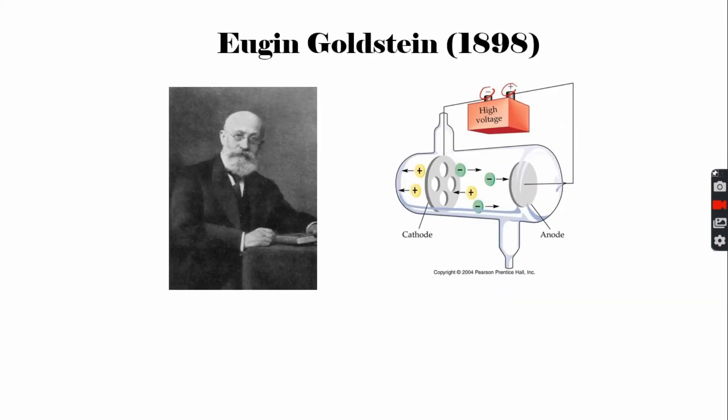Later on, in 1898, Goldstein found proof of the center of atom. While observing, he found that there were rays going in the opposite direction. He called the ray as canal ray. He concluded that they were composed of positive charges.